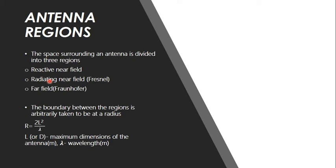The second region is called the radiating near field region or the Fresnel region — here is where the radiations try to emerge. Electromagnetic radiations require the E field and H field to be perpendicular to each other; only if E and H are perpendicular will the radiations travel from transmitter to receiver. However, E and H fields are not yet perpendicular in this Fresnel region — they try to become perpendicular here. Only after crossing the boundary of the Fresnel region do we reach the far field, where the boundary is arbitrarily taken at a radius of 2L² by λ.